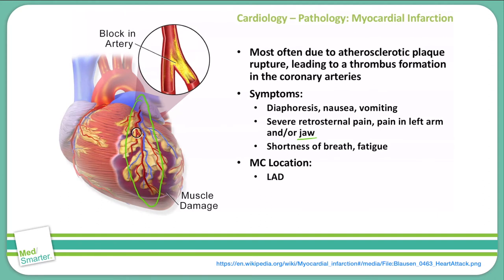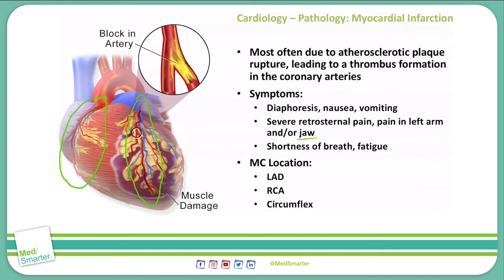The next most common location is the right coronary artery. The right coronary artery supplies the right atrium, portions of the right ventricle, and the inferior and posterior portions of the heart. The third most common location is the circumflex artery, which is a branch off of the left coronary artery and supplies portions of the left ventricle and the posterior side of the heart.